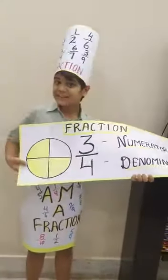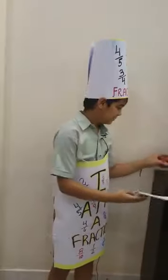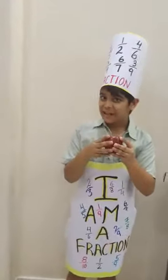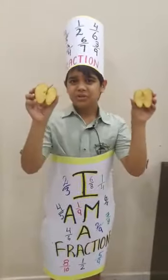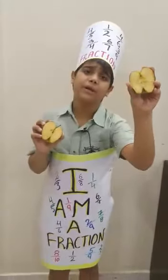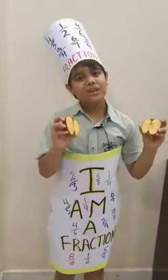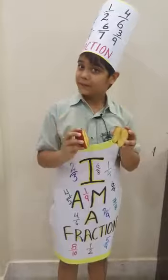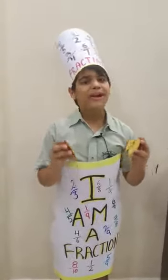Now let's take another example. This apple is divided into 2 parts, so 2 is the denominator. And I want to eat only one part of this apple, so 1 is the numerator. So the fraction will become 1 by 2, which is also called one half.